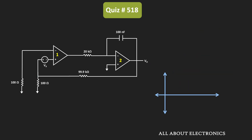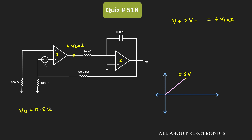Graphically, from the start of the circuit the output voltage will gradually increase and reach 0.5 volt. As soon as it goes beyond 0.5 volt, V+ is greater than V-, and in this condition the output of the first comparator will become plus Vsat. Now the input to the integrator will be plus Vsat, and the output of the integrator will be equal to 0.5 volt minus 1 divided by RC times the integral of Vin dt, which equals 0.5 volt minus Vsat times 500 times t. That means from this point the output voltage will start reducing.